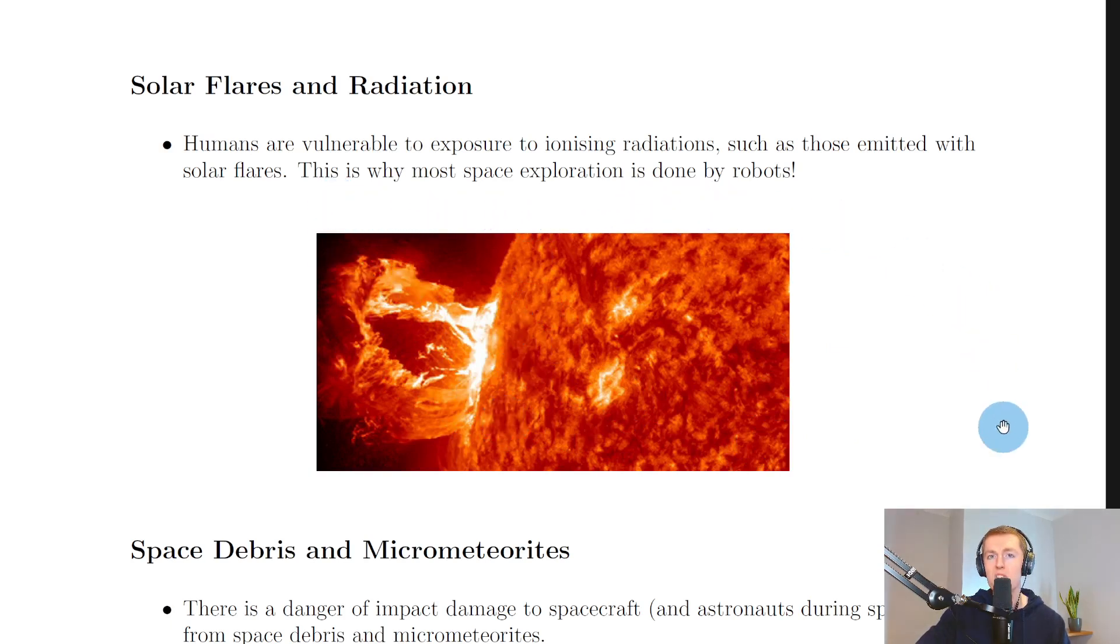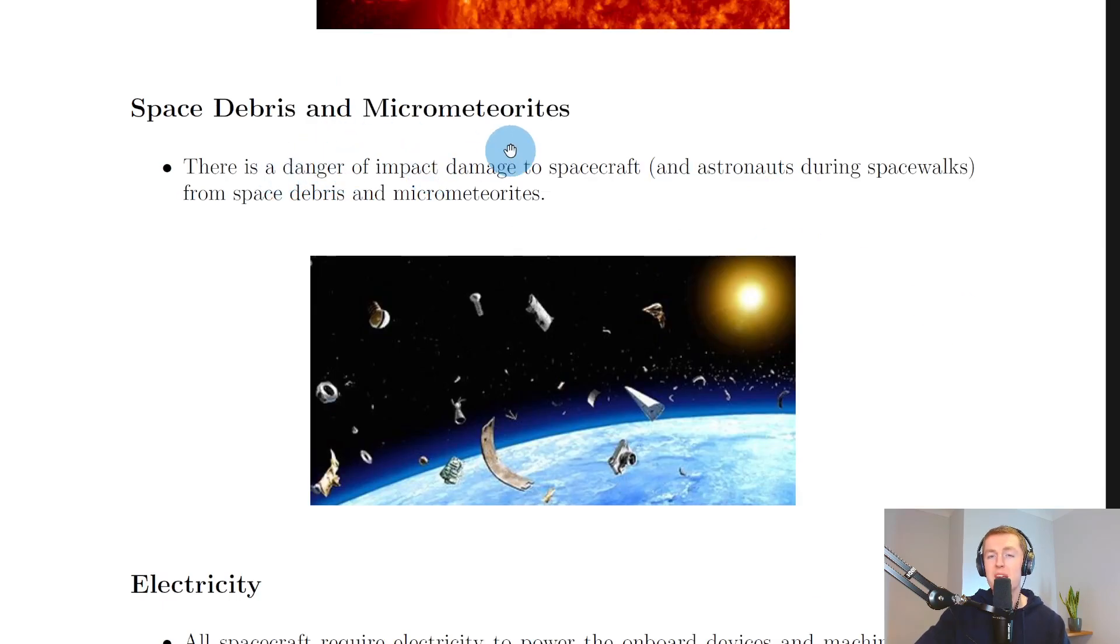Another risk would be space debris and micrometeorites. There is a danger of impact damage to spacecraft and astronauts during spacewalks from space debris and micrometeorites. There's a good scene in the film Gravity which shows you the dangers of this space debris. The picture here shows you an example of space debris—it could just be bits of satellites that have broken or bits of other spacecraft that have burned up on re-entry and so on.